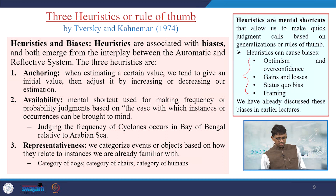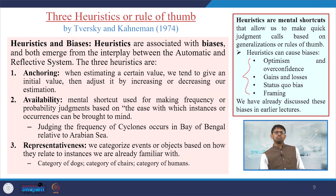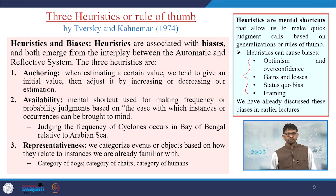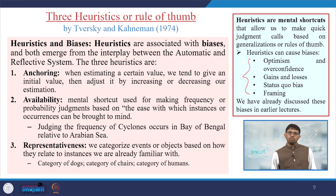In the case of anchoring, when estimating a certain value, we tend to give an initial value and then adjust it around that initial value, either increasing or decreasing. Regarding availability, it is a mental shortcut used in making frequency or probability judgments based on the ease with which instances or occurrences can be brought to mind. For example, judging the frequency of cyclones in the Bay of Bengal, since people nearby are more familiar with it, leads to higher perceived frequency compared to the Arabian Sea.